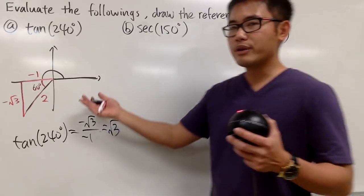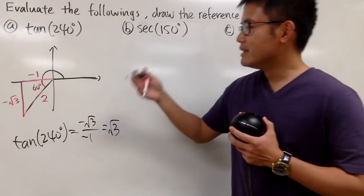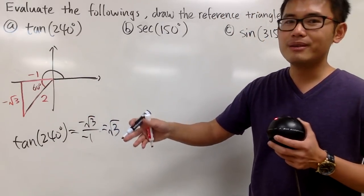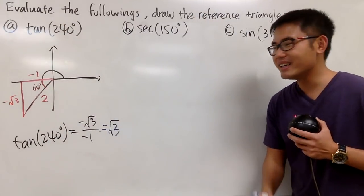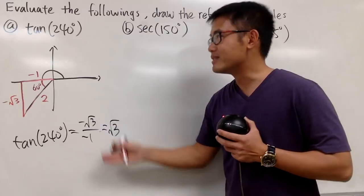And of course, you can do more. You can do sine, cosine, tangent, secant, cosecant, cotangent. Based on this triangle with this angle, 240 degrees. But this is the answer for that.